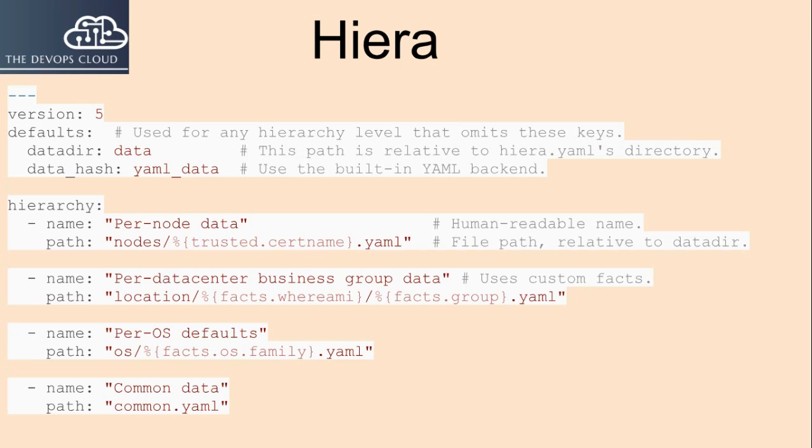The data_hash value must be one of the following: yaml_data for YAML, json_data for JSON, or hoken_data for Hoken. data_dir is the directory where data files are kept and can be omitted if you set a default. This path is relative to hiera.yaml's directory. For example, if the config file is at /etc/puppetlabs/code/environment/production/hiera.yaml and the data_dir is set to data, the full path to the data directory is /etc/puppetlabs/code/environment/production/data. In the global layer you can optionally set the data_dir to an absolute path, but in the other layers it must always be relative.